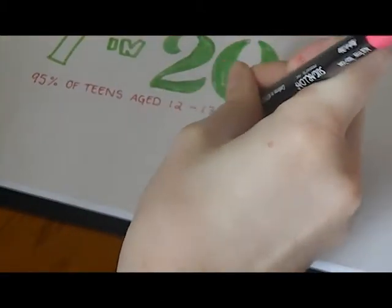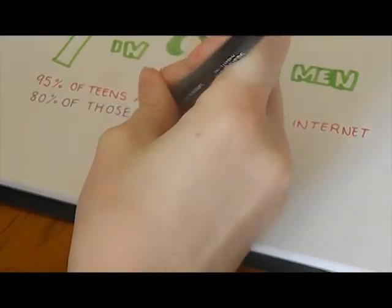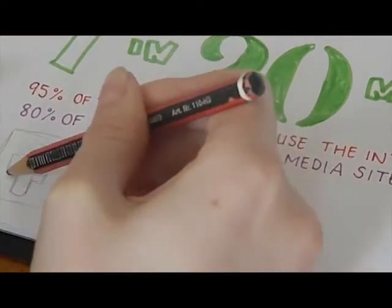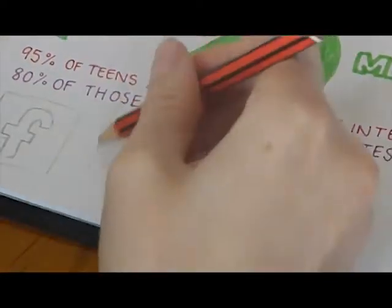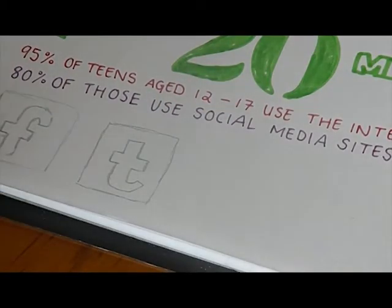95% of teens aged 12 to 17 use the internet and 80% of those online teens use social media sites. These social media sites probably go under the lines of Facebook, Tumblr. I love Tumblr. I'm obsessed with Tumblr. And Twitter.